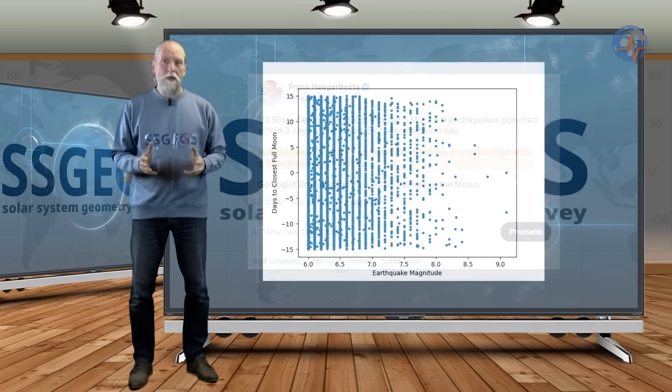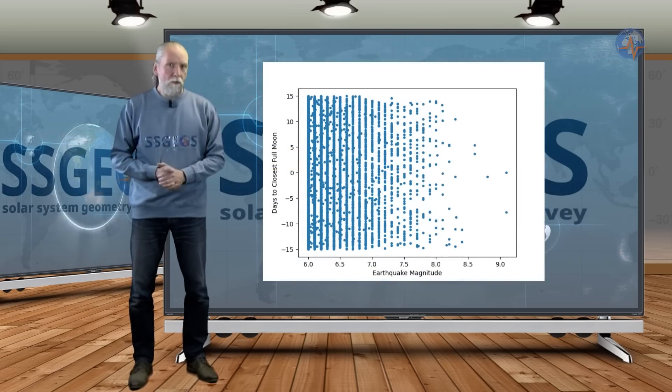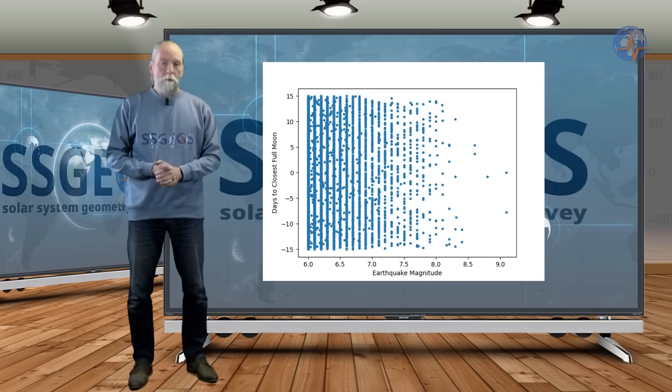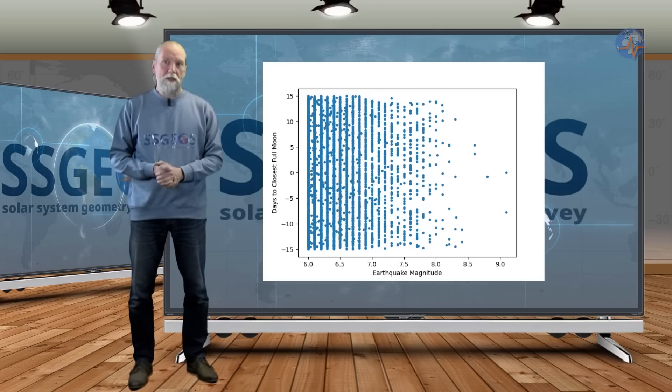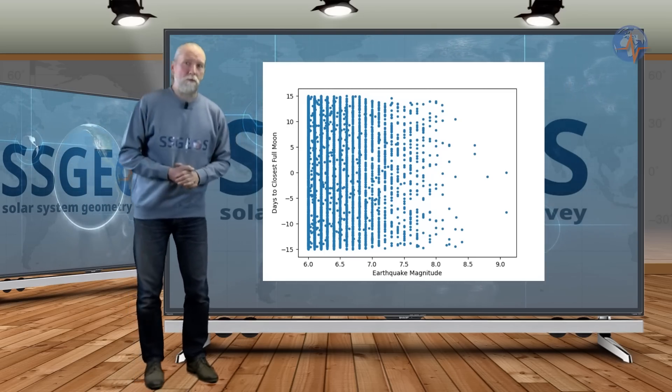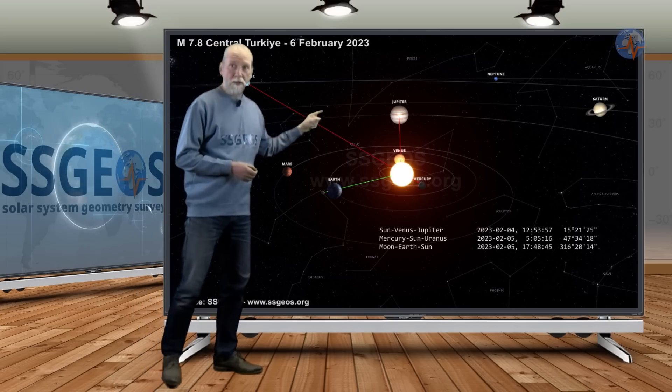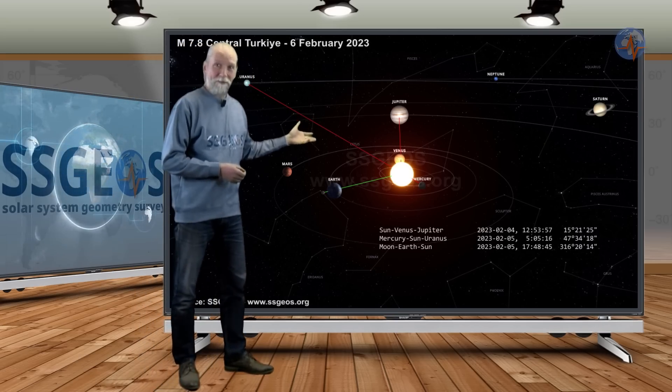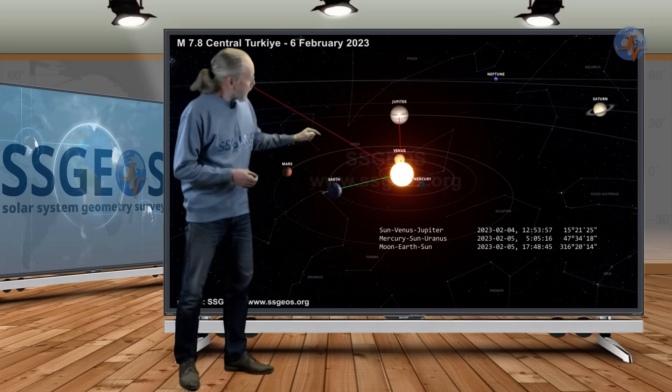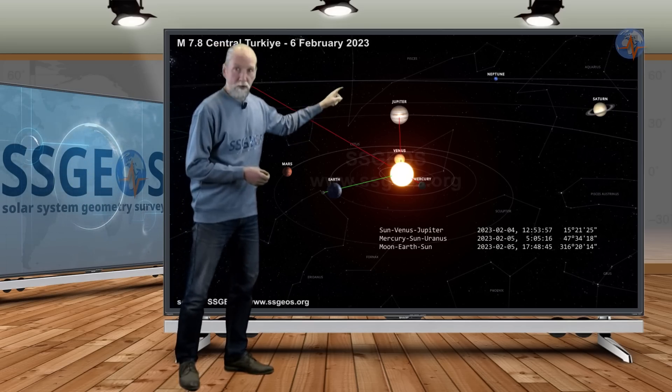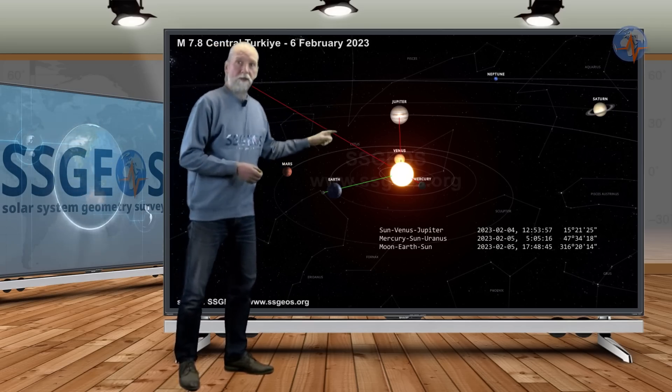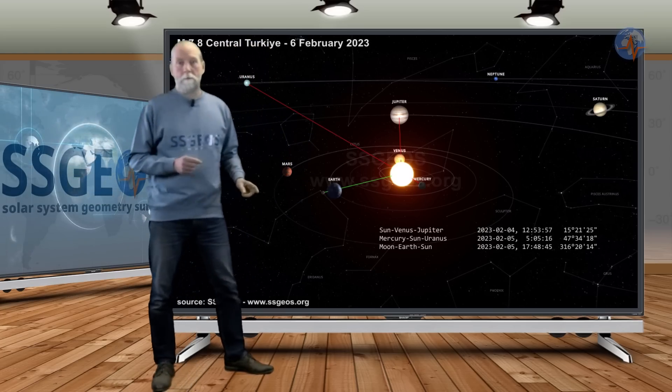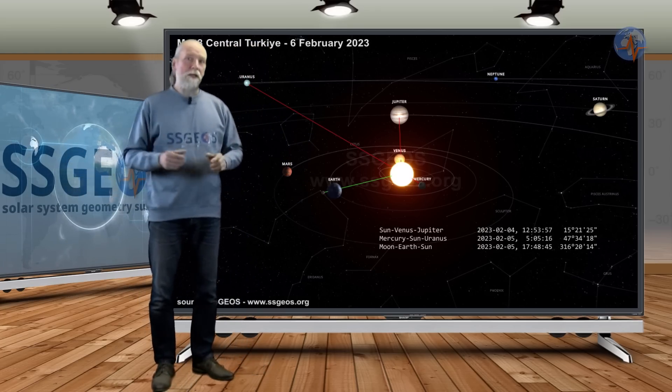I've seen comparison with an analysis of all the full moons since 1970, but that analysis does not include planetary positions. So let me show the difference to you. On 6 February, with the major earthquake in Turkey, it occurred at full moon, but at the same time we saw a planetary conjunction with the Sun, Venus, and Jupiter, and Mercury, Sun, and Uranus at the same time, and that makes a major difference.